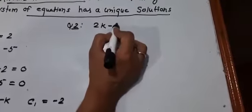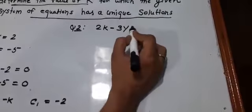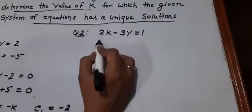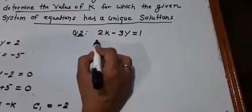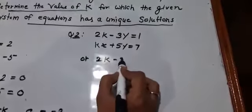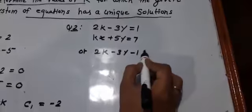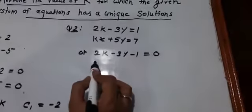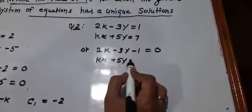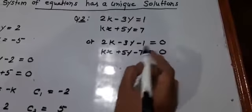2x minus 3y equal 1, or 2x minus 3y minus 1 equal 0. Or kx plus 5y minus 7 equal 0.